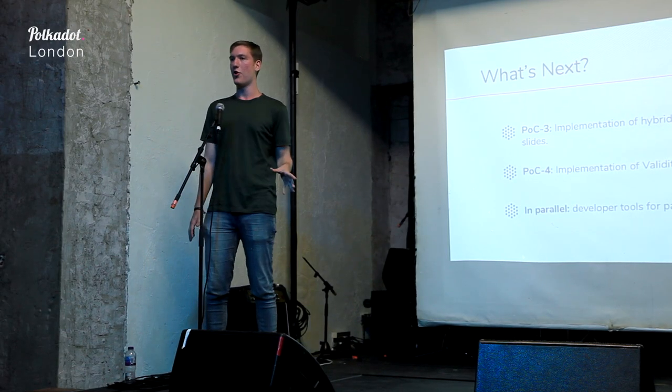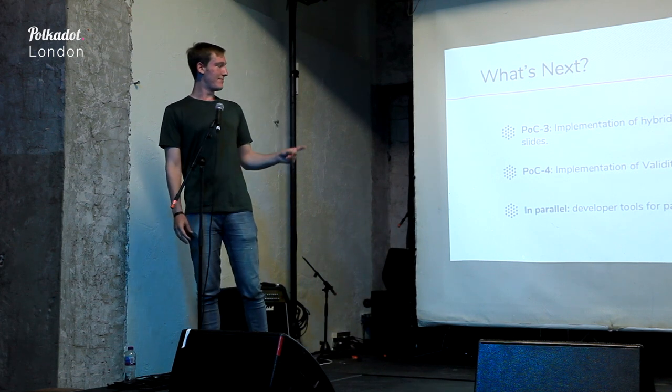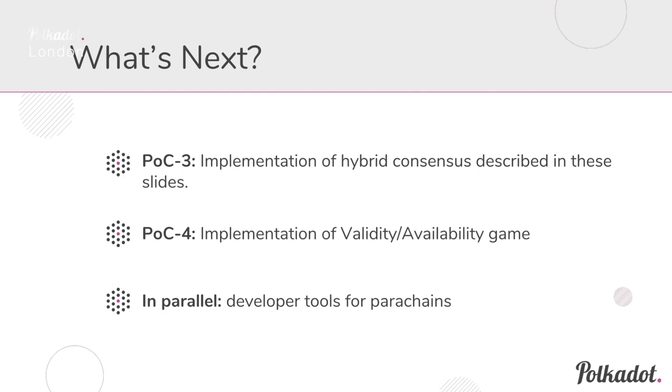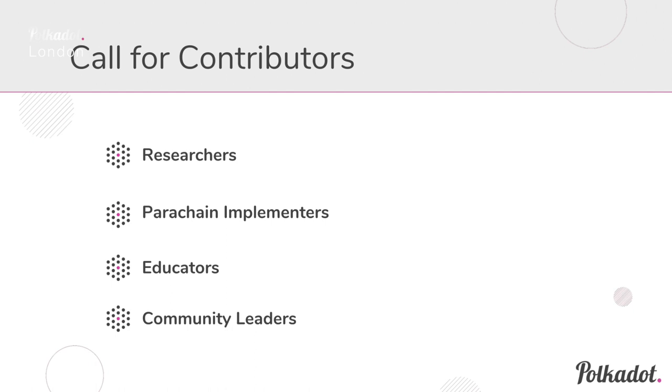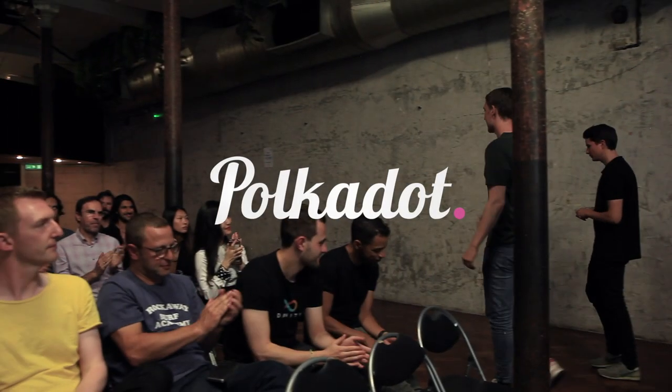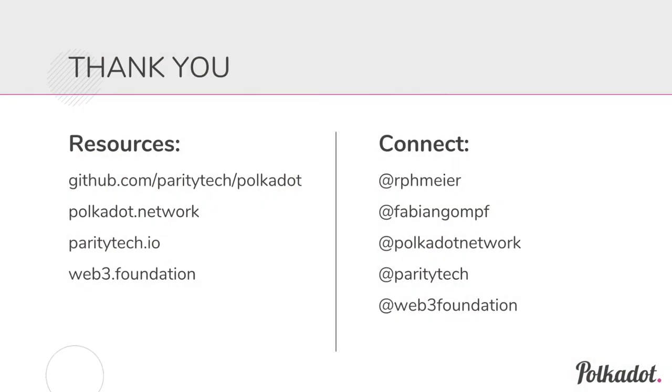Beyond POC4, it'll mostly be incremental improvements, modeling, testing, and auditing, just to make sure it's airtight. From POC4 you'll really have almost all the functionality you'd want as a developer. In parallel, we'll be building developer tools — libraries in Rust and other languages for writing parachain runtimes, validity functions, collator nodes, and things like that. If you are one of these people or know one — researchers, parachain implementers, educators, community leaders — let us know. We're always looking for contributors to work on Polkadot, help contribute, help us figure out some of the hardest problems in this space. Thank you very much.